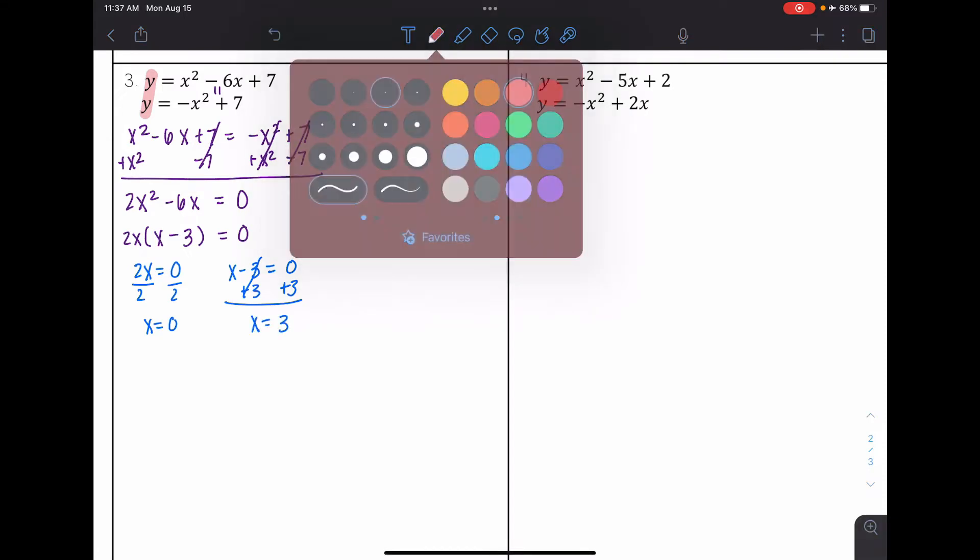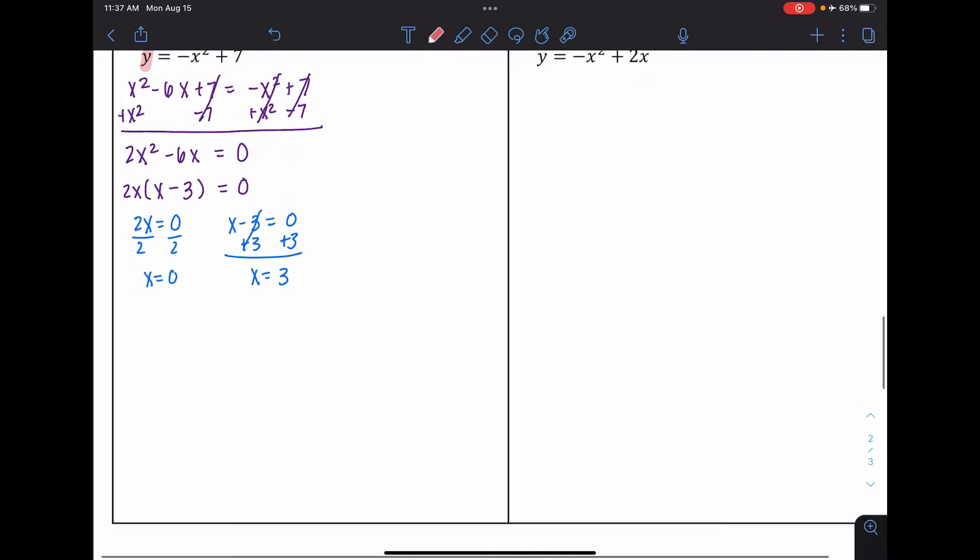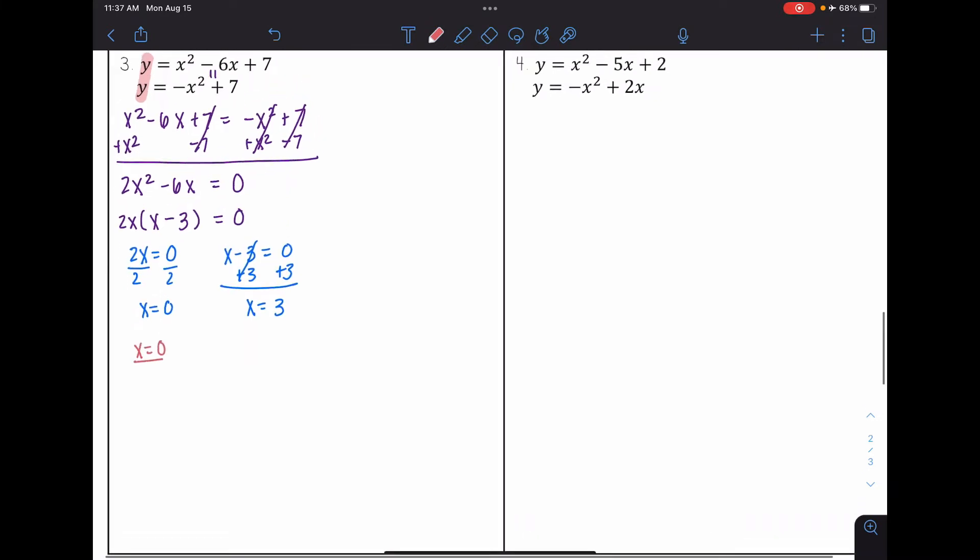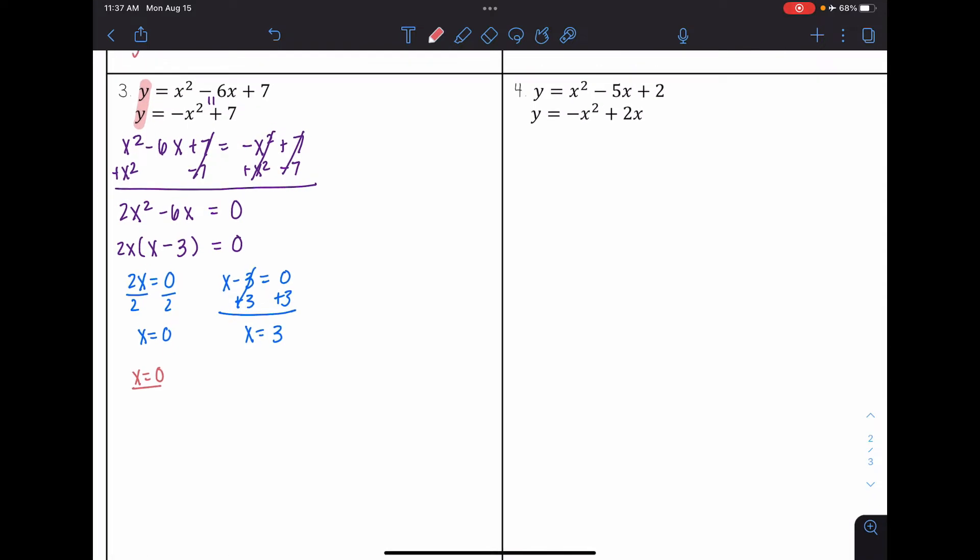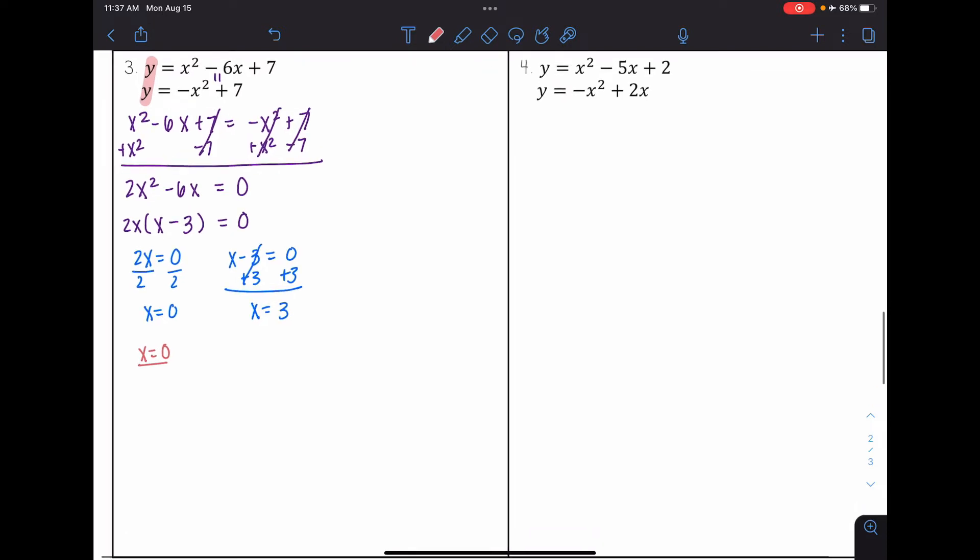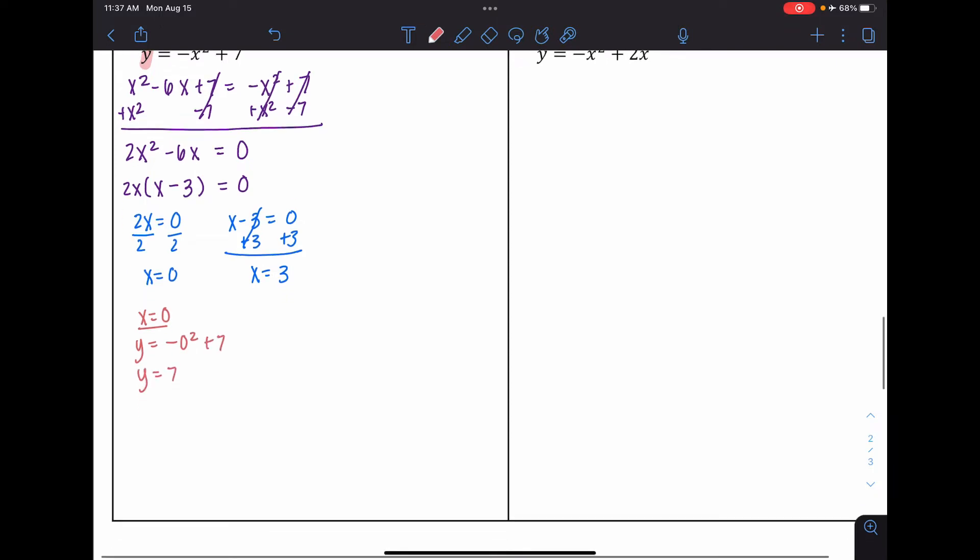Now I need to find the corresponding y coordinate with those values. And so I'm going to first have it for x equals 0. Here, looking between these two, I think the second one's a little bit easier to plug in, just because there's only two terms. So I have y equals negative 0 squared plus 7. So my first coordinate is going to be 0, 7.